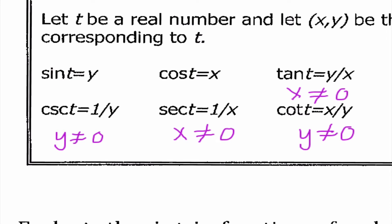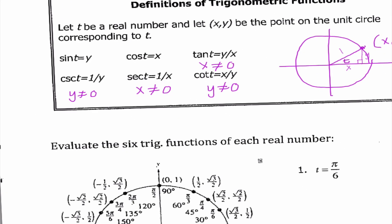We just need to somehow memorize that sine goes with Y, and that's going to be a relationship that we see again and again. The way I remember is that the vowel sound in sine kind of sounds like Y — sine, Y. It's dumb, but think of something like that that will help you remember it and you'll be in good shape.